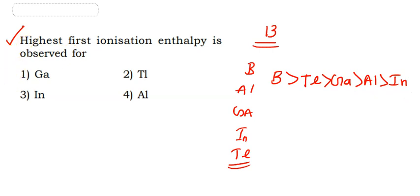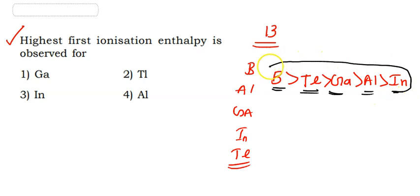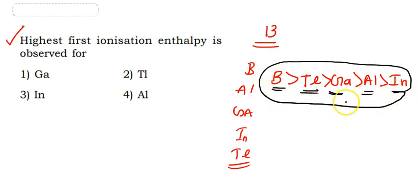The order is: Thallium, Gallium, Aluminium, and Indium. These are very important. If you are interested in these questions, you will be able to answer them. We are going to do these questions in this series and playlist.